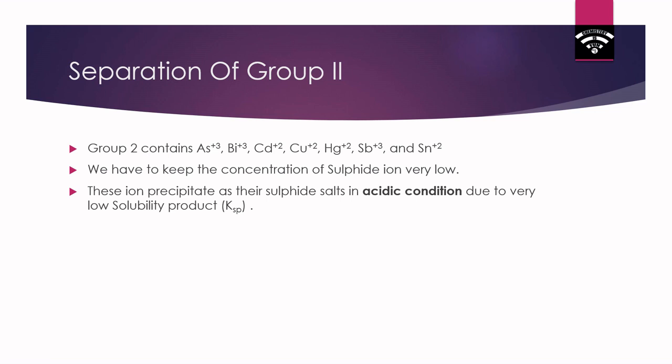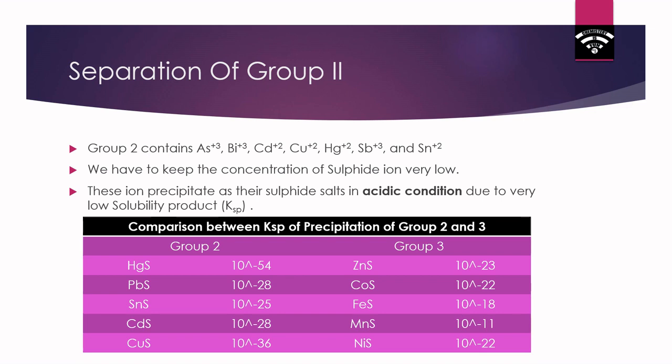For the analysis of Group 2 cations, we need sulfide ion in acidic media. As discussed in the previous video, Group 2 cations give precipitation of their corresponding sulfides under acidic conditions. We have to maintain acidic conditions to keep the sulfide ion concentration in the solution very low, because the solubility products of the Group 2 cation sulfides are very low. Here is a chart of the solubility products of the sulfides of Group 2 and Group 3 cations.